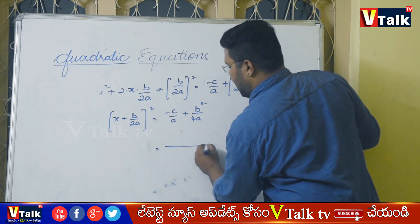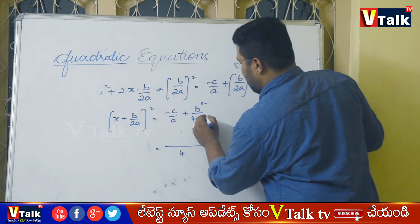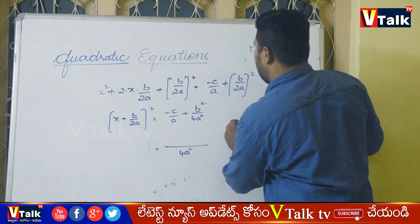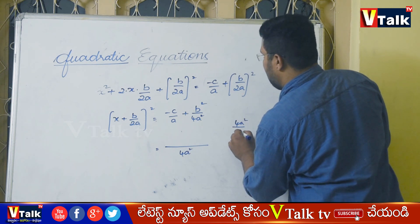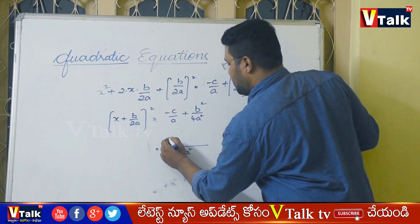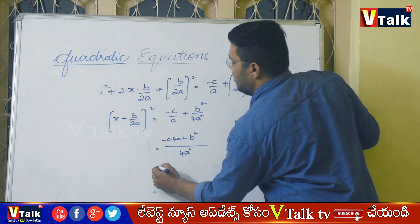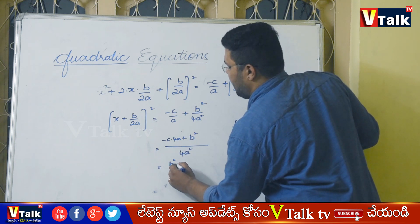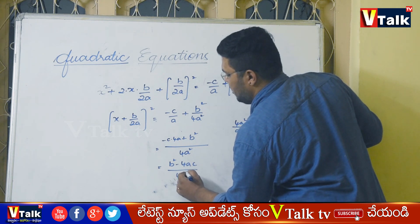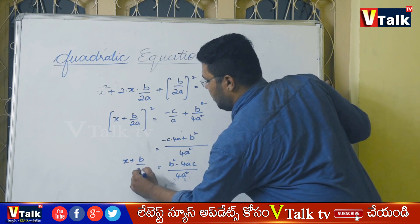Next step: simplifying the right-hand side. Multiplying numerator and denominator of minus c by a by 4a, we get minus 4ac, then combining: x plus b by 2a whole square equals b squared minus 4ac by 4a squared.